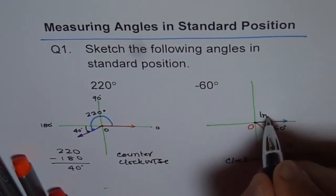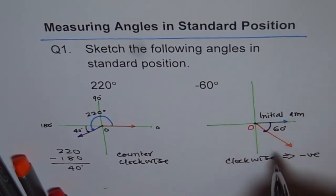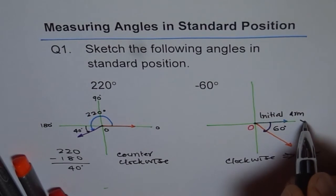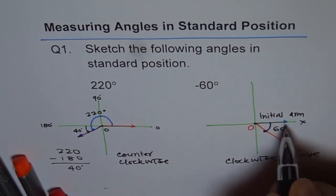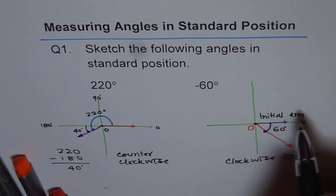So I am writing here: Initial arm along positive x-axis. Do you see that? Initial arm is along positive x-axis. Now the terminal arm can be in any quadrant.